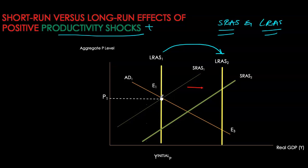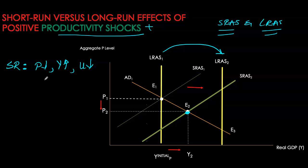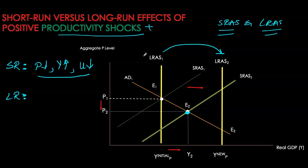We were initially at E1 and because of the positive productivity shock, let's look at the short-run impact. In the short-run, my short-run AS has moved from AS1 to AS2. Our short-run equilibrium is always given by the intersection of AD and AS, which is now at E2. So in the short-run, my price level has gone down because of the positive productivity shock and GDP is definitely higher than before at Y2. With higher output, unemployment is comparatively lower. However, we have to identify the output gap: Y2 is still a lot lower than my new potential because with productivity, we're no longer working with our old potential GDP.